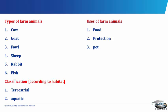Classification of farm animals according to their habitat. A habitat is a place where a farm animal lives. We have the terrestrial habitat and the aquatic habitat. The terrestrial animals are those animals which live on land, while the aquatic animals are those animals which live in water.